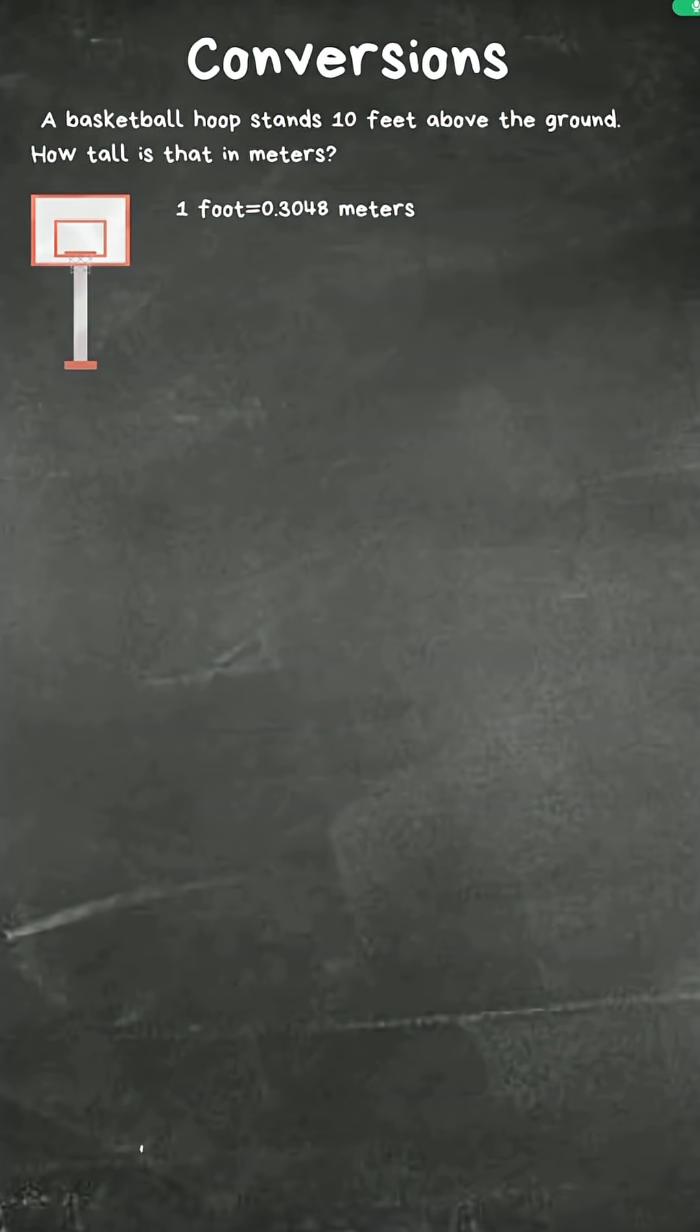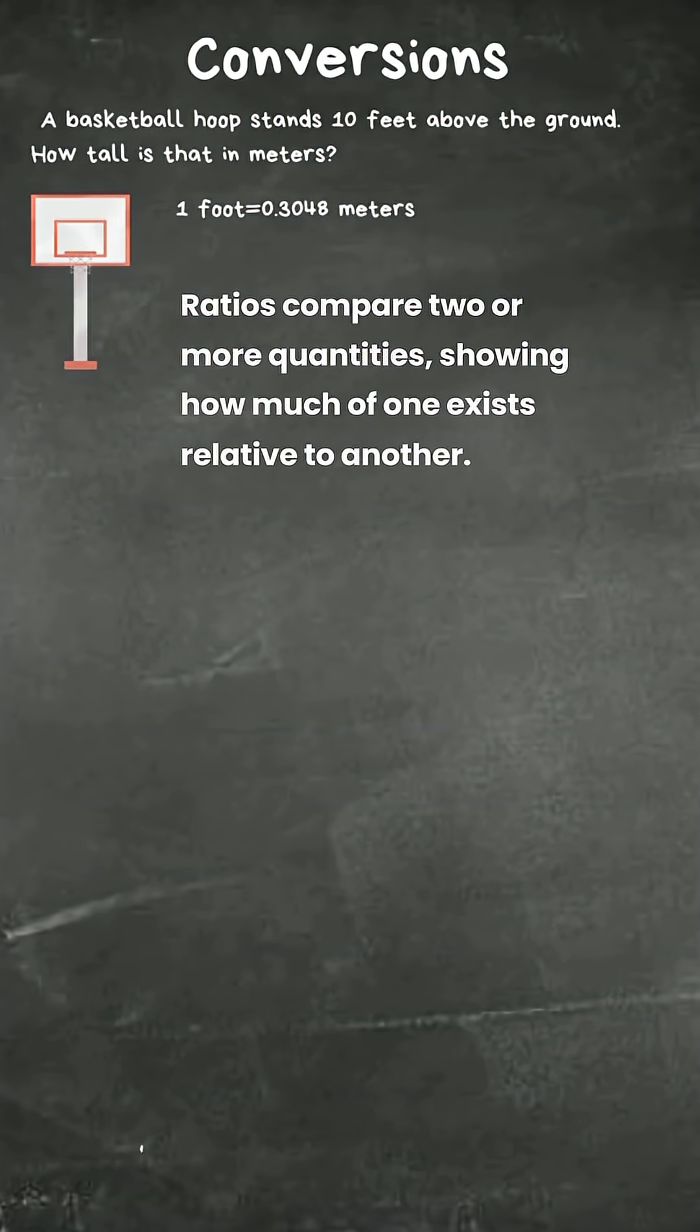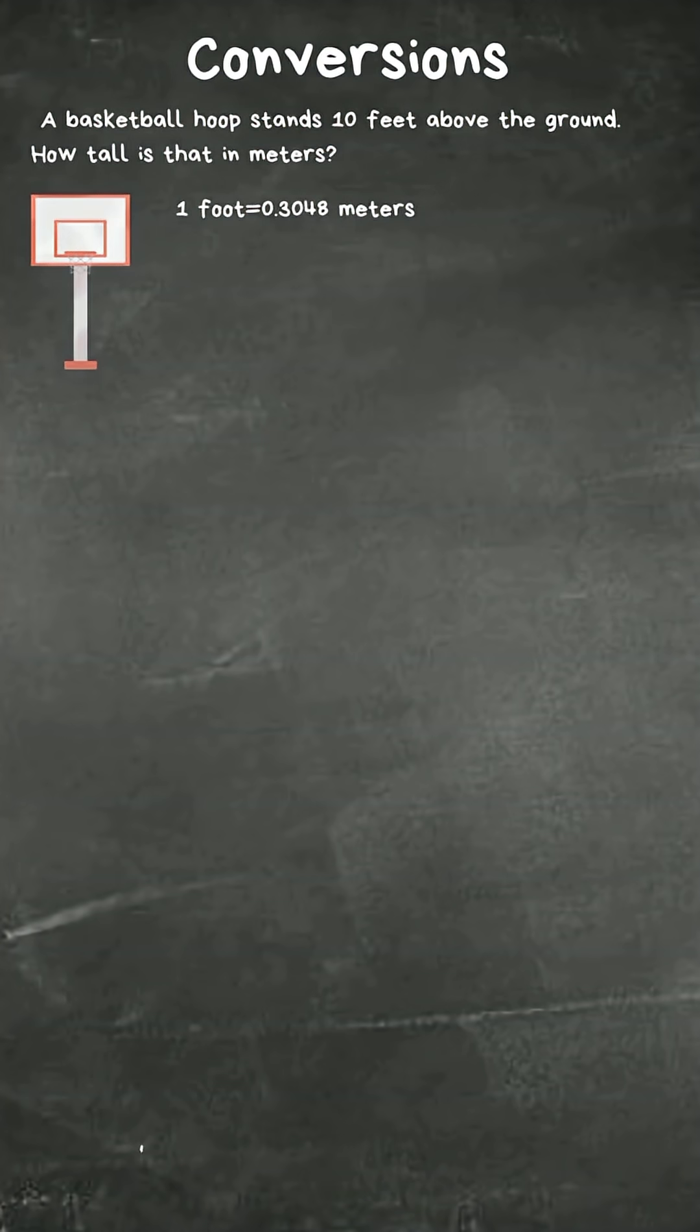Let's use ratios in order to solve a conversion question. Here's the question: a basketball hoop stands ten feet above the ground. How tall is that in meters? Our conversion factor is one foot equals 0.3048 meters.